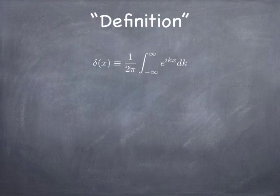Of course, when k is equal to 0, you get e to the 0, which is 1. So you're integrating 1 from minus infinity to infinity. And so you get infinity. So the function is infinite when x is equal to 0. It's 0 when x is non-zero. And it's a matter of some mathematics to show that when you integrate over all x, you get 1.